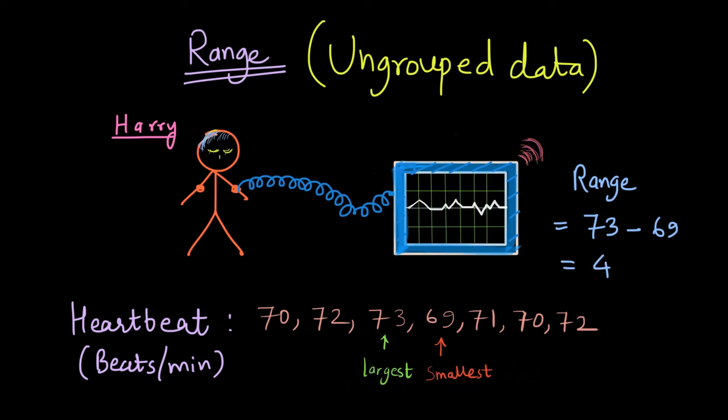Looking at this range, the doctor would conclude that Harry has a stable heartbeat. This shows how calculating range from ungrouped data helps determine whether data has larger or smaller variation.